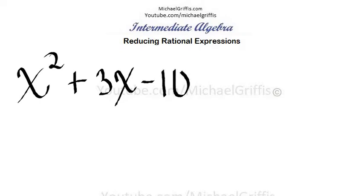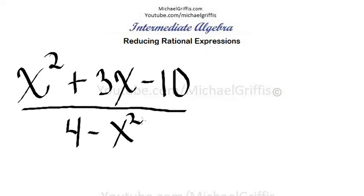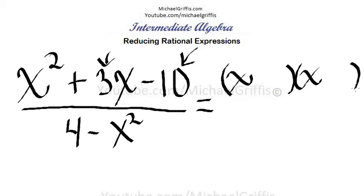minus 10 is all over 4 minus x squared. Let's go ahead and factor that numerator. Two numbers multiplied together gives us negative 10 and when we add them we get a positive 3. Let's think about this for a second. What about 2 and 5? I believe 2 and 5 might work. Positive 5 because this is a plus sign here and a minus 2, right? 5 times negative 2 is negative 10, 5 minus 2 is 3.